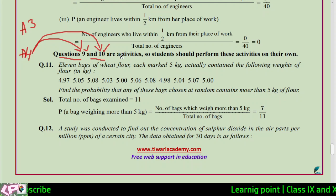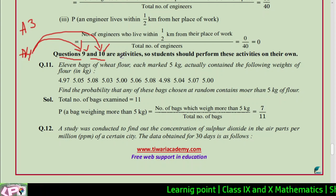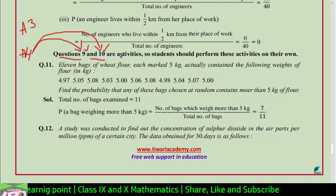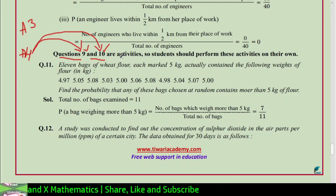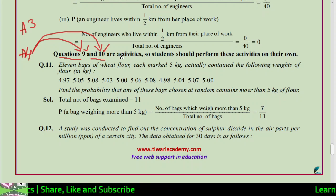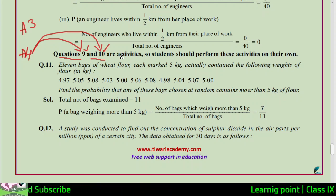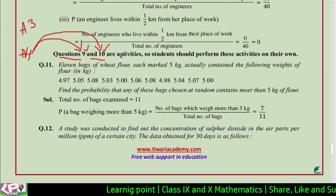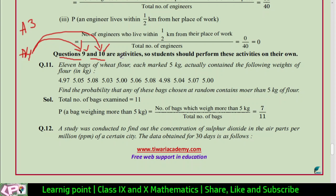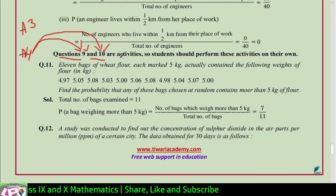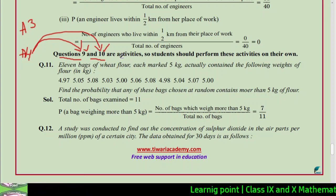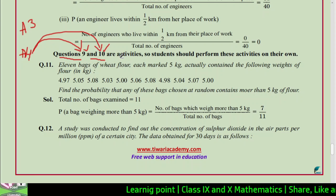Categorize them: two-wheelers means bikes and bicycles; three-wheelers means autos; four-wheelers means cars, buses, tempo travellers, and all other vehicles — include all those in the four-wheeler section even if they have more than four wheels. Take the data like this, then find the probability of two-wheelers. That is the task for you.